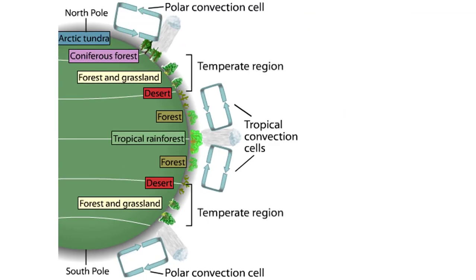In the temperate regions, which lie between the polar and tropical regions, there are no stable convection cells. Variable winds form when cool, dry air from polar regions collides with warm, moist air from the tropics.